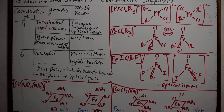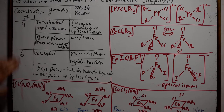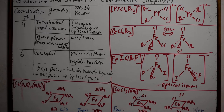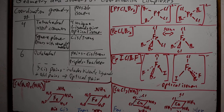We are looking at covalent complexes, their geometry, and their isomers. Geometry is based on coordination number — the number of attachments or lone pairs donated to the metal ion. If we have two lone pairs, they are on opposite sides of the metal ion and we have a linear geometry. There are no possible isomers with linear geometry.